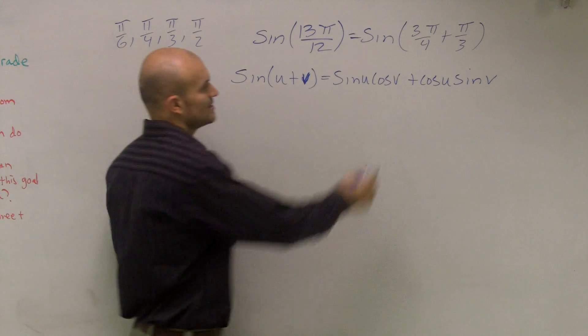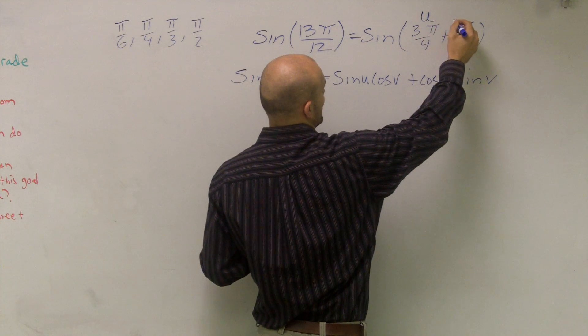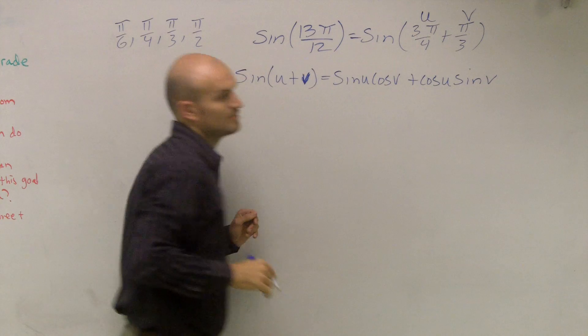So what I'm going to do is I'm going to let 3π over 4 be my u and π over 3 be my v.